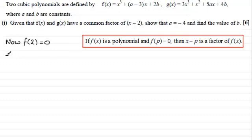what I need to do then is substitute 2 for x into here and equate it to 0. So therefore what we've got is 2 cubed plus 2 times, I'll put the x at the front of this bracket, 2 times (a-3), plus 2b.